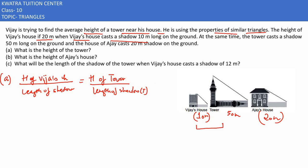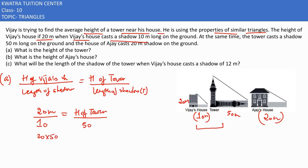The height of Vijay's house is already given as 20 meters, and the length of the shadow is 10 meters. The height of the tower is unknown, so let's call it x, and the length of the tower's shadow is 50 meters. Cross multiplying gives 20 into 50 divided by 10, which equals 100 meters. So the height of the tower is 100 meters.